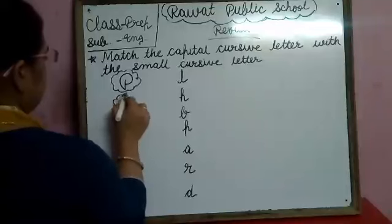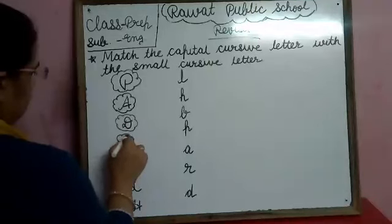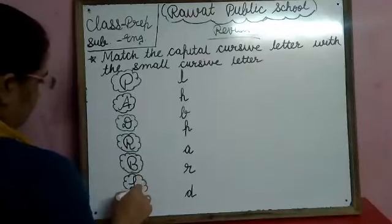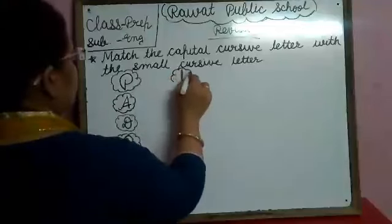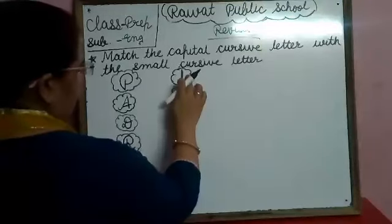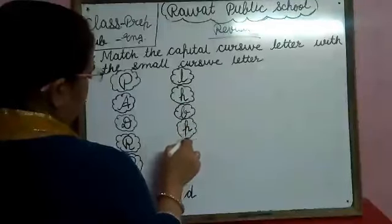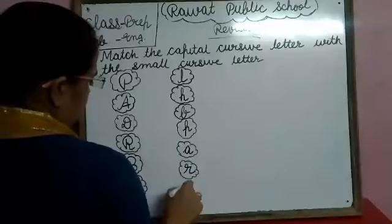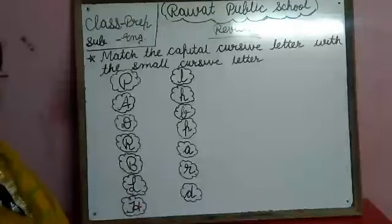Capital cursive D, capital cursive A, capital cursive D, capital cursive R, capital cursive B, capital cursive L, capital cursive H. Small cursive L, small cursive H, small cursive D, small cursive P, small cursive A, small cursive R, small cursive D. Okay. So, match the capital cursive letter with the small cursive letter.